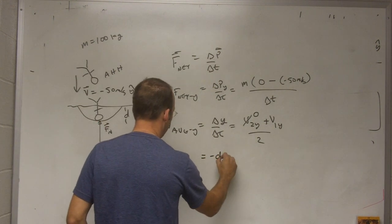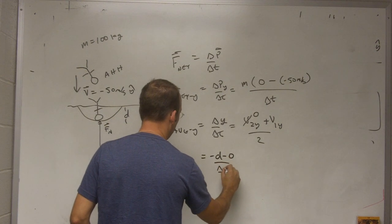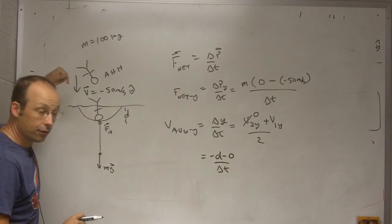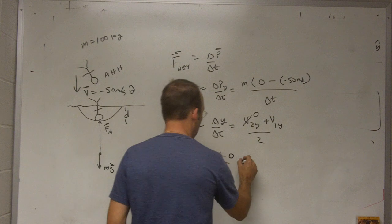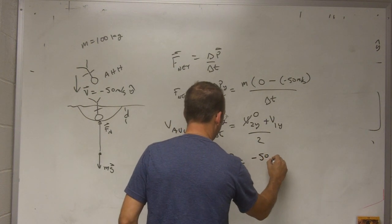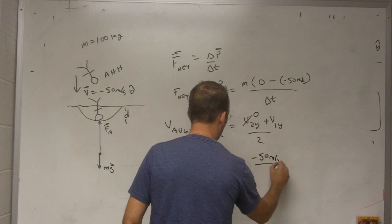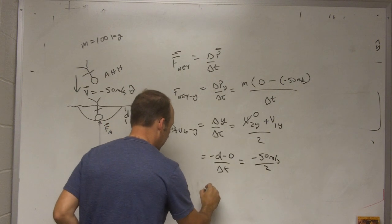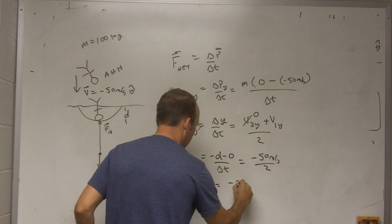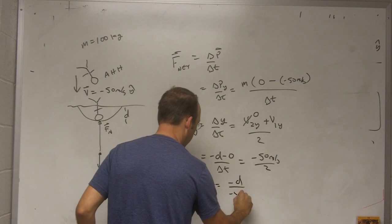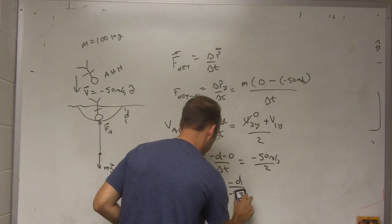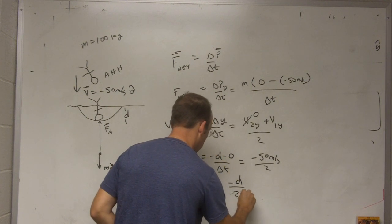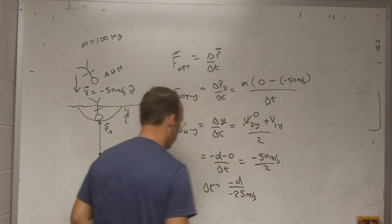I will just write it out. It is going to be final of negative D minus zero over delta T. It has to be negative because he is moving down. And that is going to be negative 50 over 2. So delta T is going to be positive. Delta T is going to be negative D over negative 50 times 2, so it is 25.